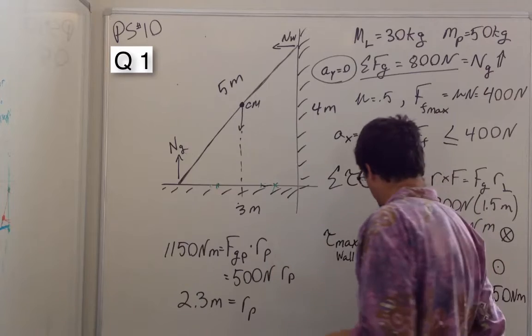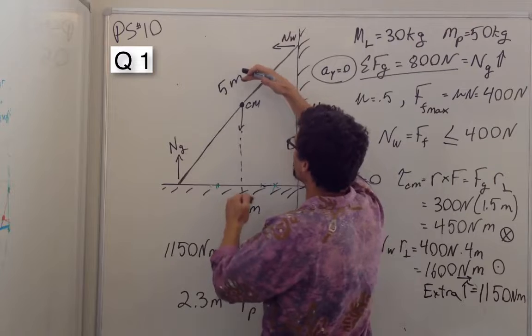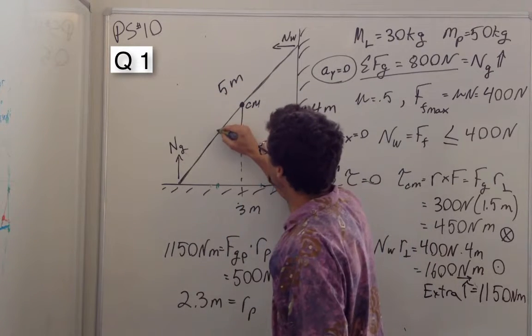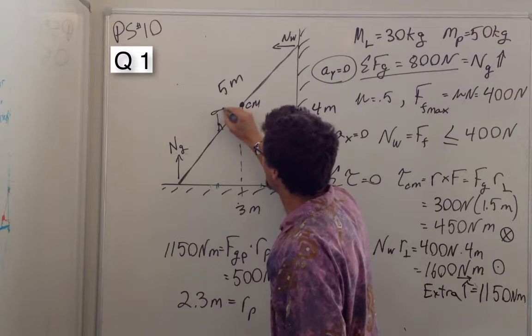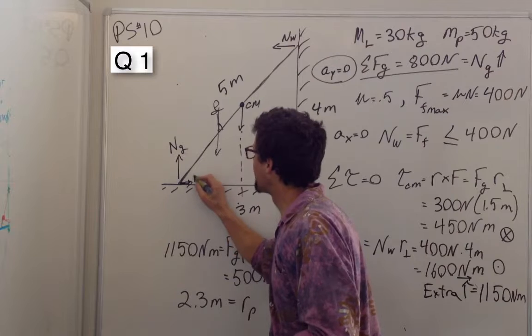We put in all our forces. We have the normal force here and we have a normal force of the wall. We have gravity pulling down on the center of our mass. We also have gravity pulling down on the person as they walk up the ladder. And we have a frictional force holding the ladder in place.